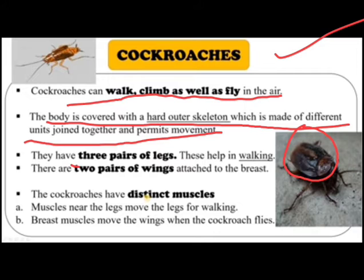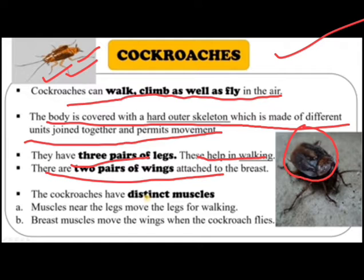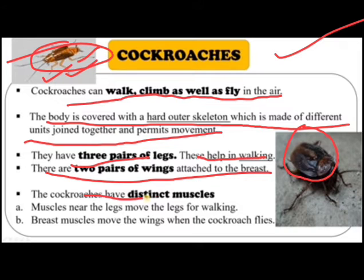Cockroaches have three pairs of legs which help in walking. There are two pairs of wings attached to the breast. Cockroaches have distinct muscles and can fly only short distances.